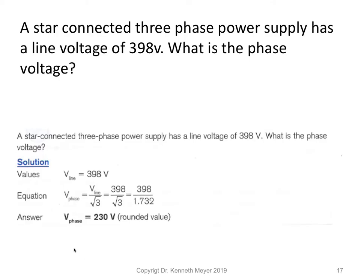Quick example: a star-connected three-phase power supply has a line voltage of 398 volts. What is the phase voltage? We know V_phase = V_line ÷ √3, so 398 ÷ √3 = 398 ÷ 1.732 = 230 volts. Very similar to the kinds of values we've already been looking at.